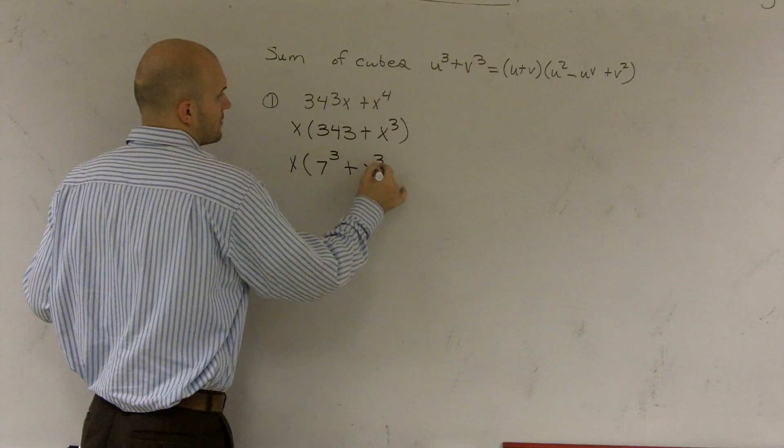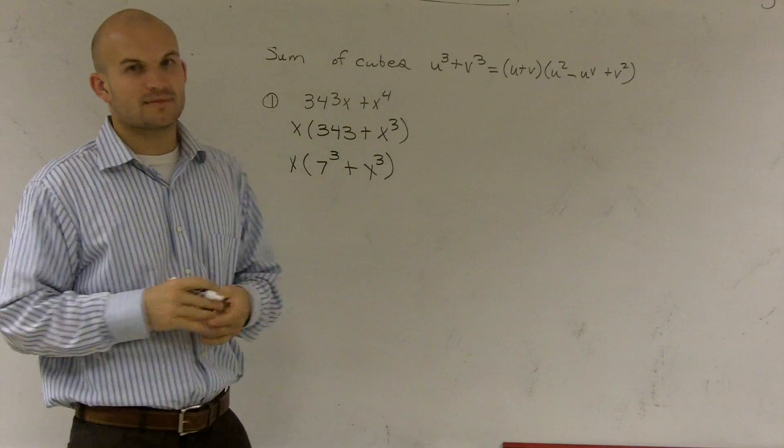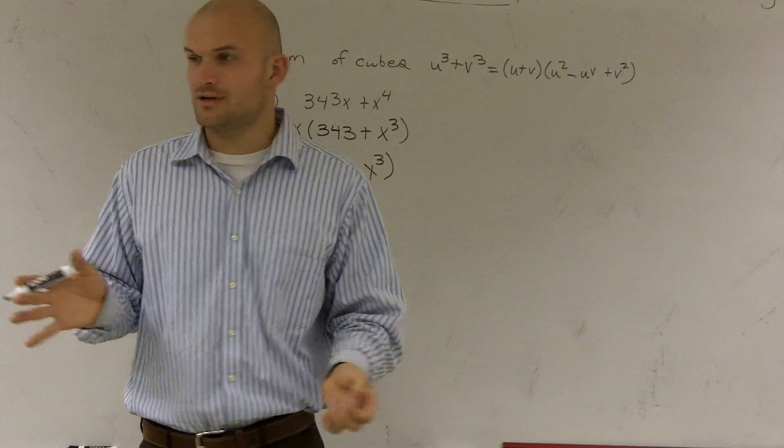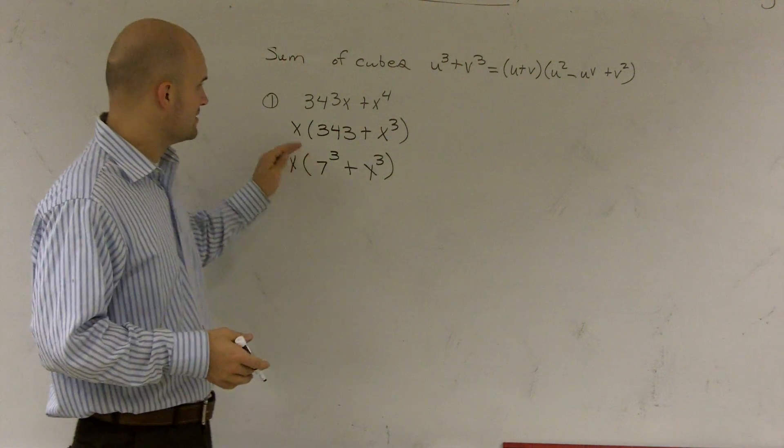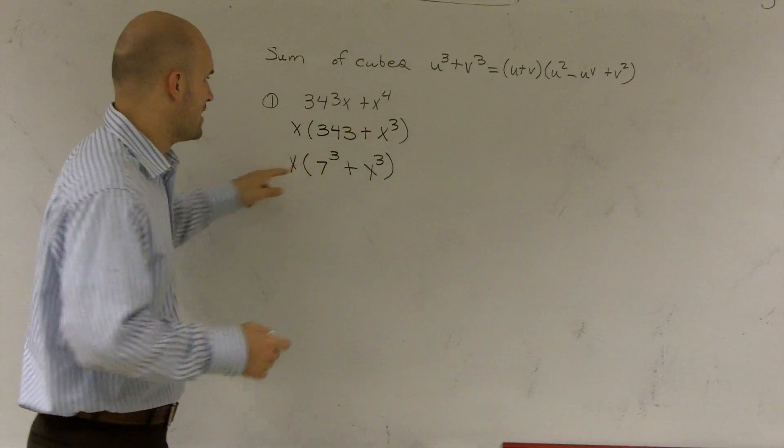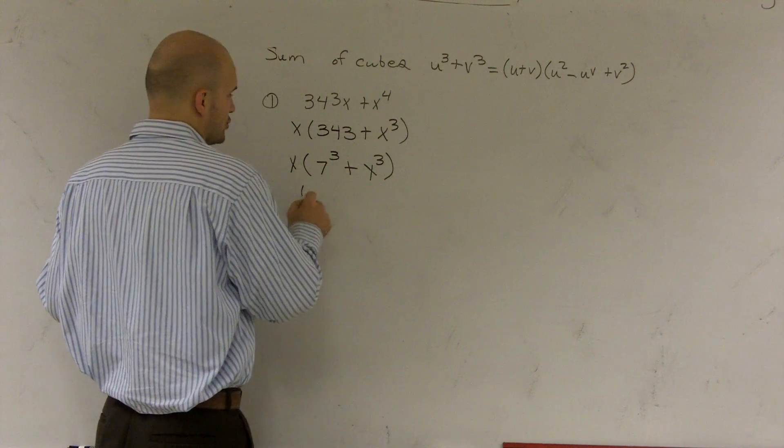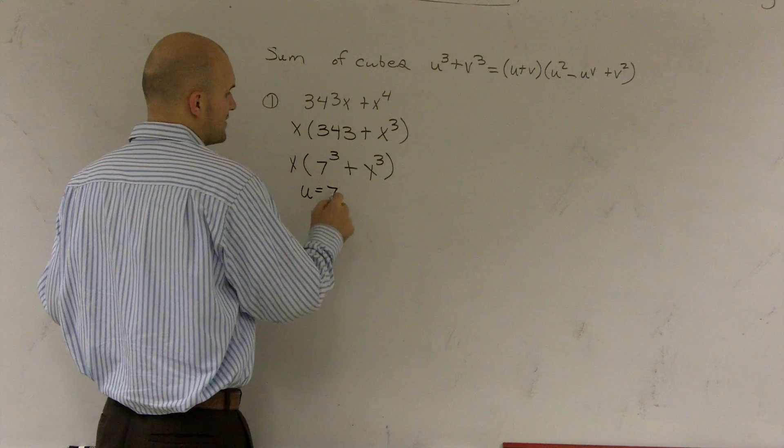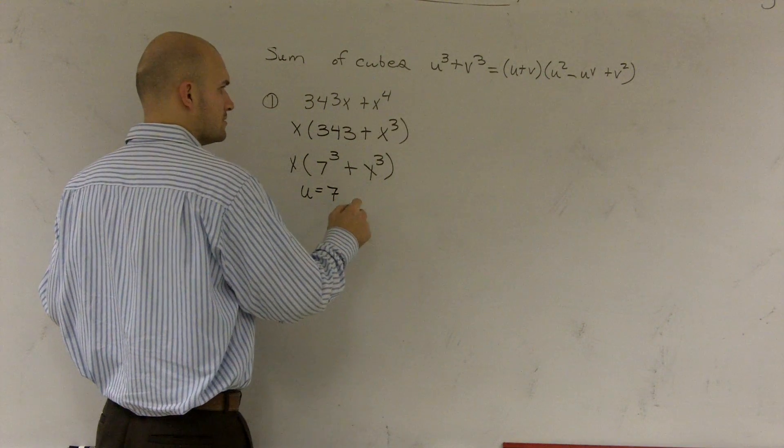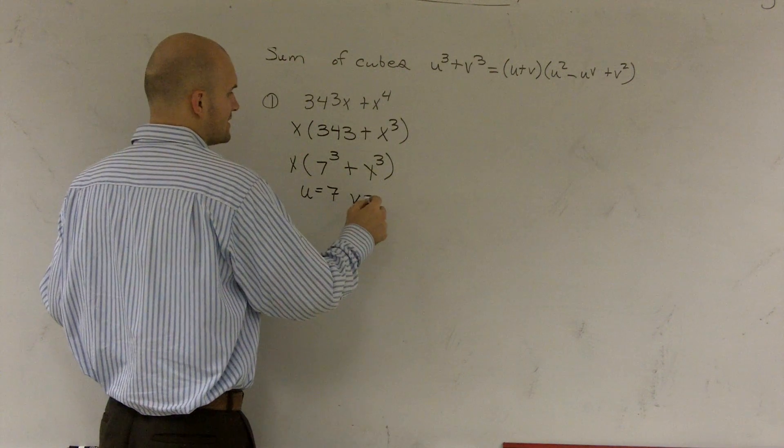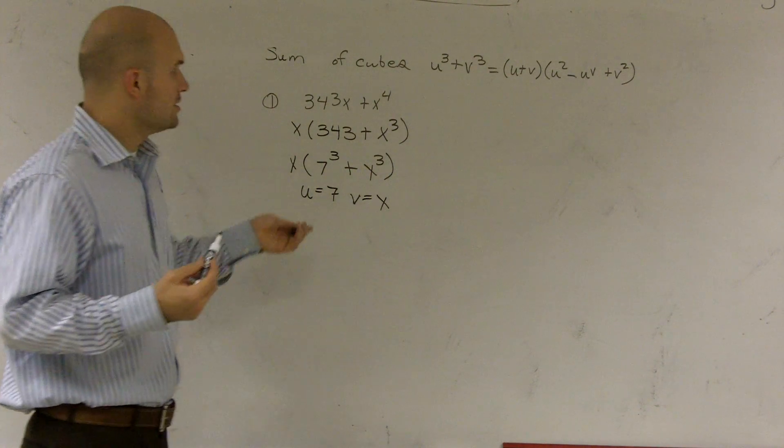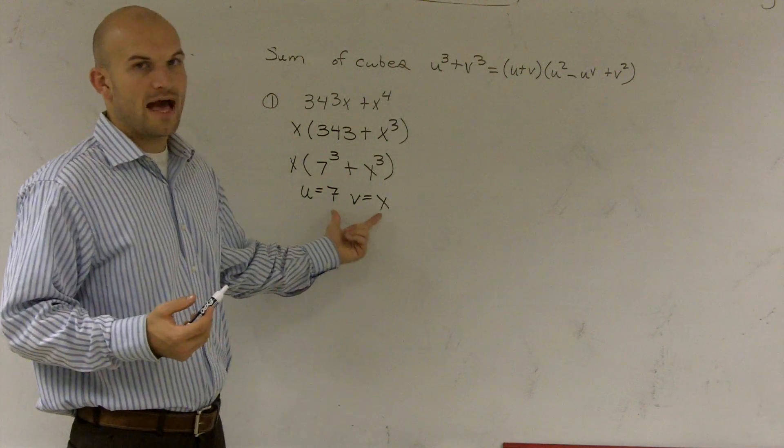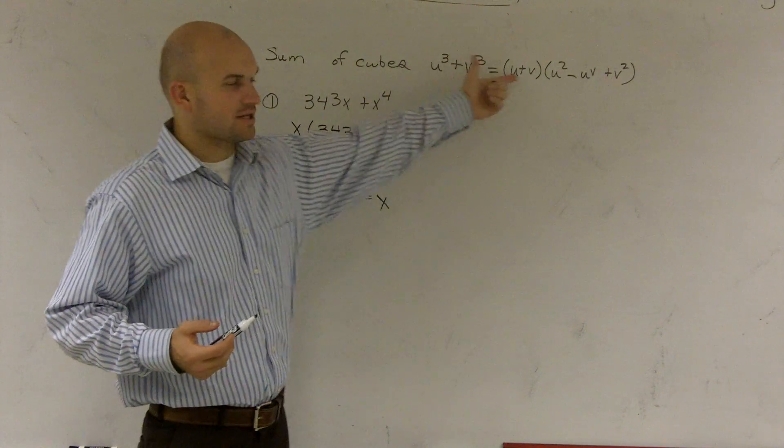Alright. That's right, because I checked my calculator to make sure it works. And since it does, it's perfect. Now what I can do is I can use this formula. So now what I essentially have is u is equal to 7 and v is equal to x. So all I'm going to do is I'm going to take my values and plug them into the formula.